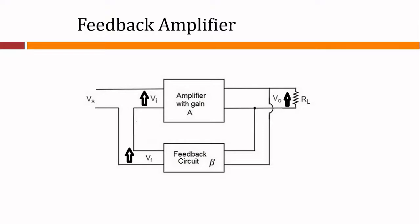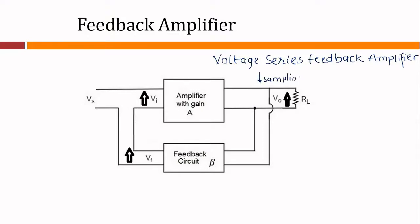Here is the block representation of the voltage series feedback amplifier. There are two things involved: one is the sampling point, and the other is a mixing point or a summing comparator. In the case of a voltage series feedback, a part of the output signal — which is a voltage — is sampled and connected back. The feedback fraction is controlled by the value of beta. It is connected in series, so this topology is referred to as voltage series feedback.